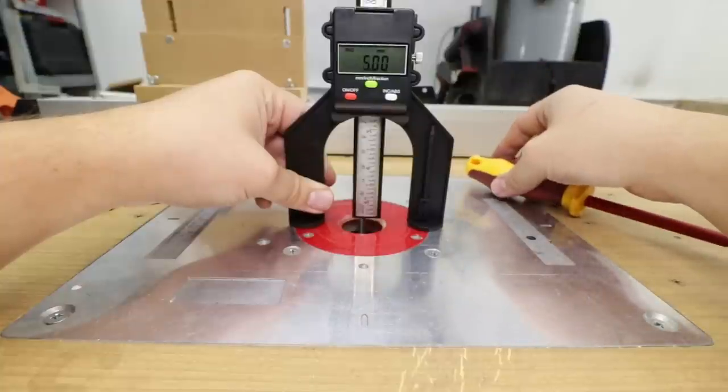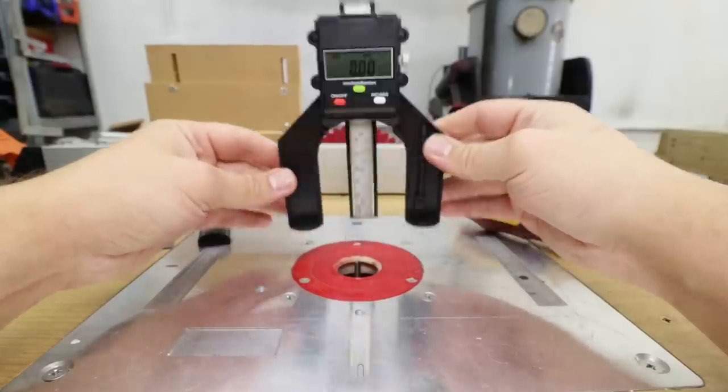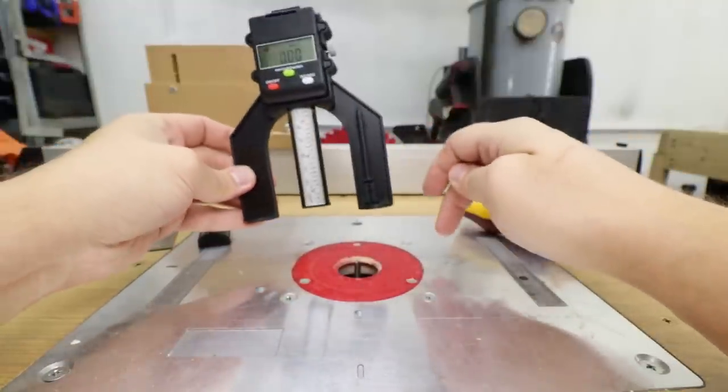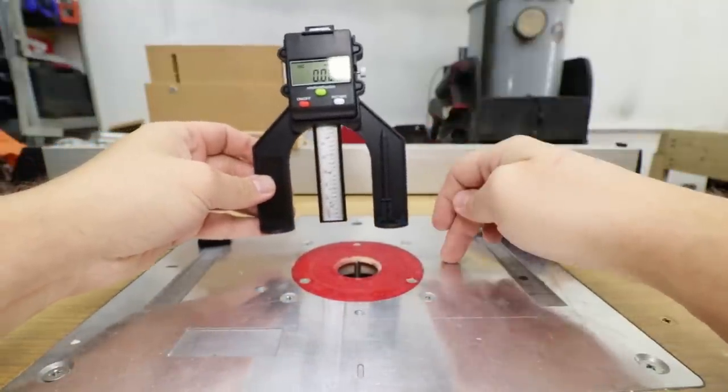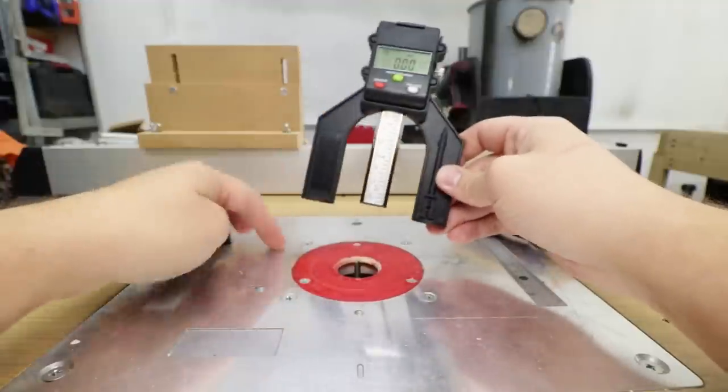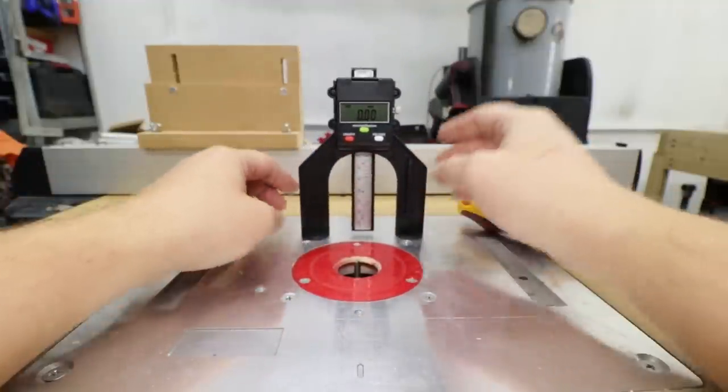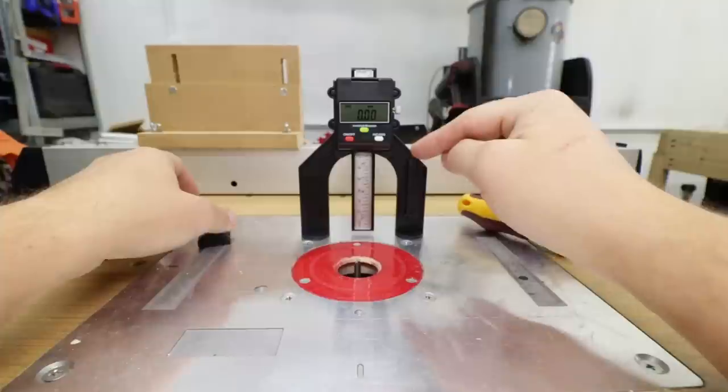And there you go, five millimeters absolutely perfect. On top of this, this digital version actually has got magnets so if you've got a cast iron router plate it's even better. For me unfortunately that's all aluminum but if you've got a cast iron one that will work for you even better.